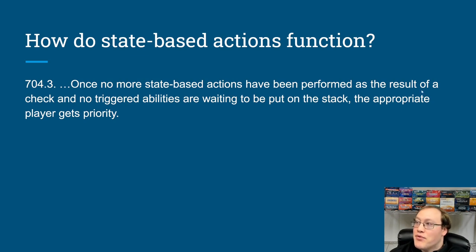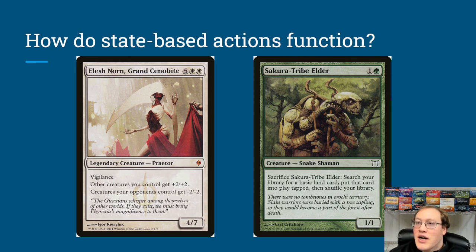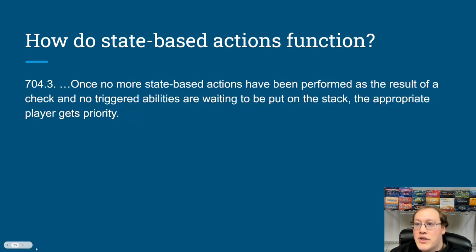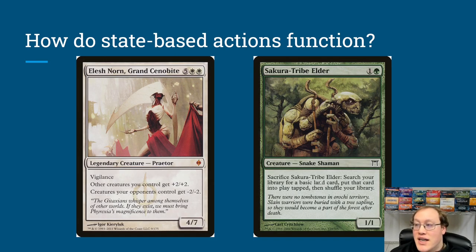Once no more state-based actions are performed and no triggered abilities are waiting, the appropriate player gets priority. This matters: if you play Sakura-Tribe Elder into an Elish Norn, can you sacrifice it before Elish Norn kills it? No — you need priority to activate the sacrifice ability, but you don't get priority until after state-based actions are performed, at which point Sakura-Tribe Elder is already in the graveyard.